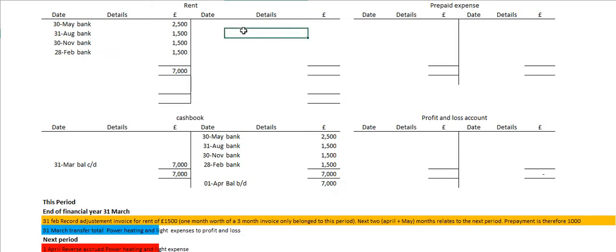So this is the scenario. We've got the end of the financial year on the 31st of March. Throughout this period there's been a number of rent payments made throughout our rent account. We can see that it has all been recorded in our rent expense account, and likewise it's been recorded in our cashbook for all of these transactions.